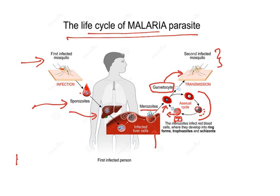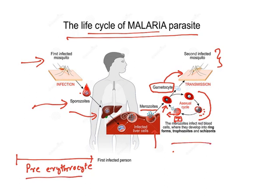There are certain stages in the malaria life cycle. The first stage, before getting into the blood, is known as the pre-erythrocytic stage — that means the parasite is in the liver before entering the red blood cell. Once it gets into the blood, it is known as the erythrocytic stage, meaning it is present inside the red blood cell.